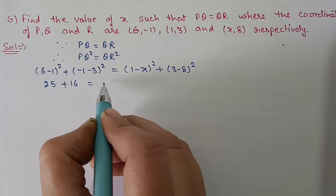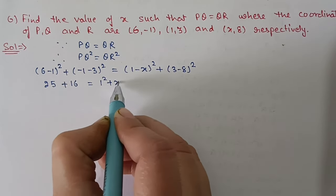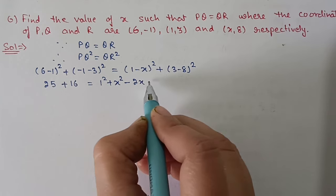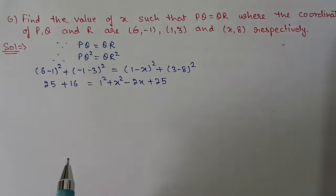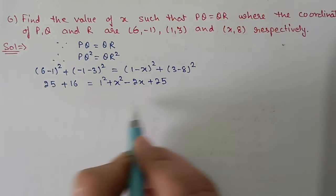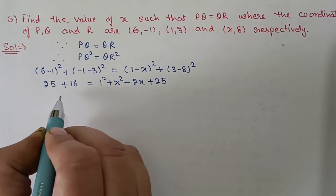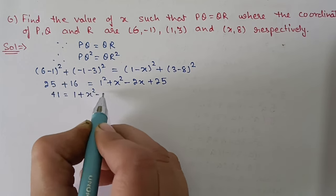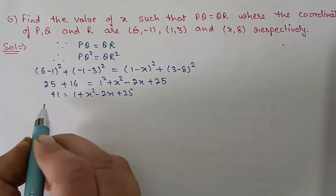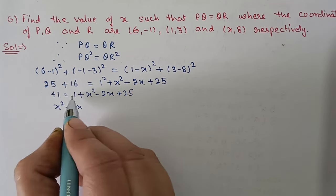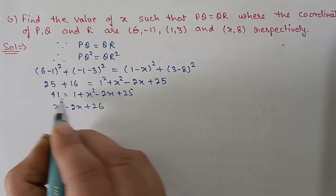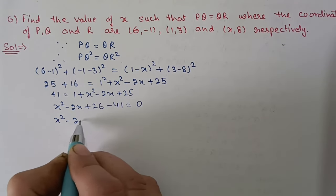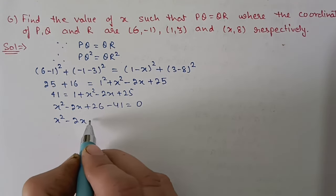Applying the (a - b)² formula on the right side: 1² + x² - 2(1)(x) = 1 + x² - 2x. And 3 - 8 = -5, so (-5)² = 25. Shifting everything: 25 + 16 = 41 equals 1 + x² - 2x + 25. So x² - 2x + 26 - 41 = 0, giving x² - 2x - 15 = 0.